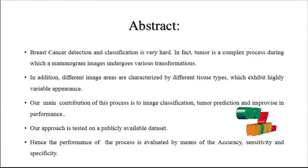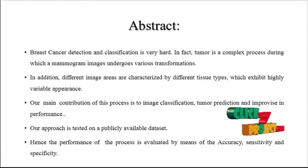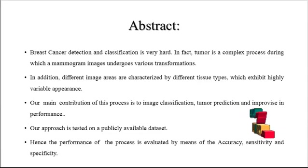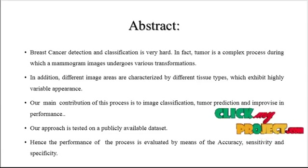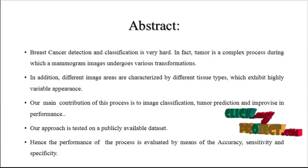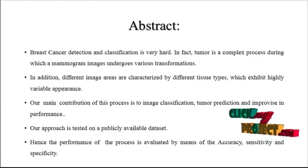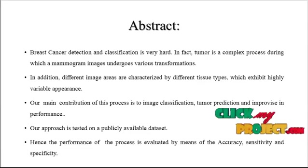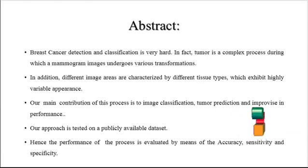In this process, we are going to do the image classification — whether the input image is having tumorous regions or not. If it is a tumorous region, it will indicate this is a tumor image. If it is a non-tumor image, it will indicate as a normal image. Our approach is tested on publicly available datasets only, so the images are collected from publicly available datasets. The performance of the process is evaluated by means of performance parameters like accuracy, sensitivity, and specificity. By these three parameters, we can justify whether our process is efficient or not.